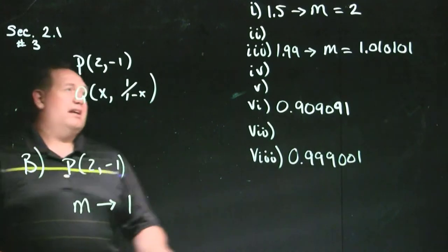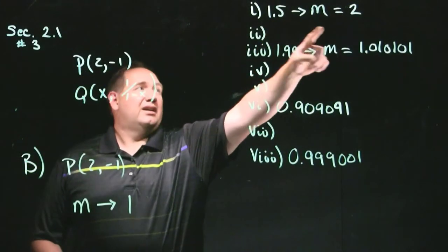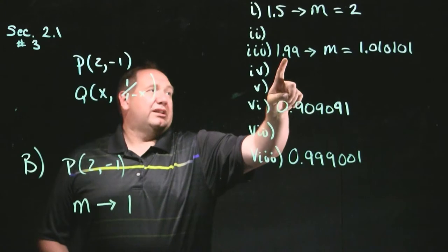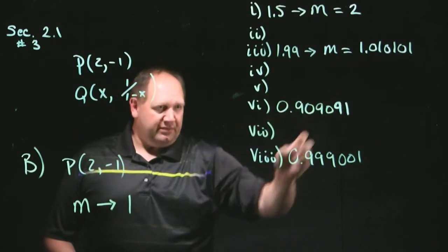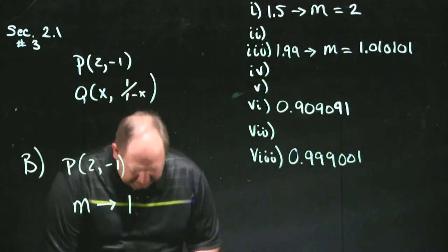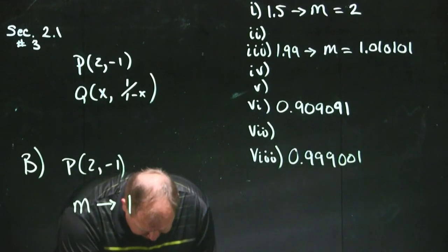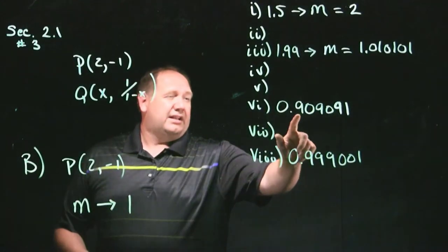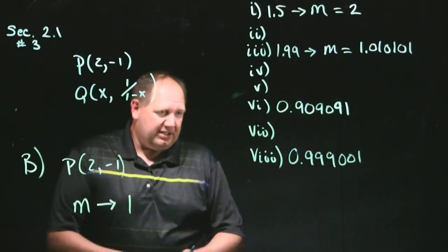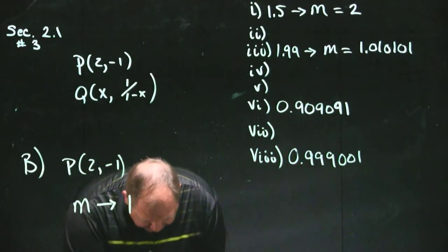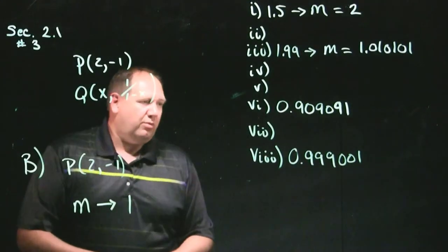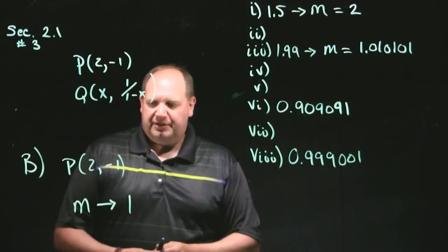And I see that when I put 1.5, I got 2. When I put 1.99, I got something close to 1. For vii, it's 2.1, and I got something kind of close to 1. And when I did viii, the input is 2.001, and I got something close to 1.